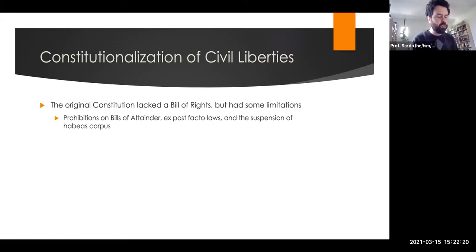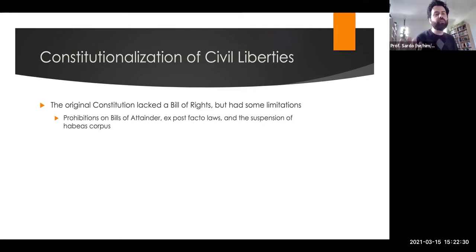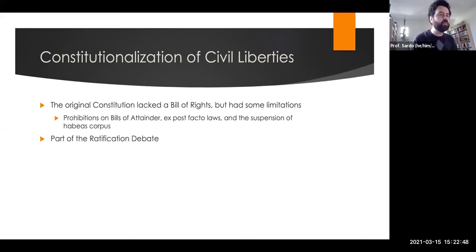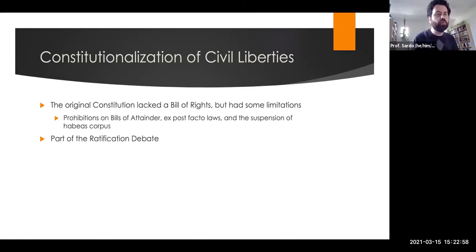Alexander Hamilton was actually skeptical of enumerating rights in a Bill of Rights, because once you explicitly write down what the government can't do, he was concerned that creates potentials for loopholes, exceptions, and exclusions — that people would try to game the system. But the Bill of Rights became part of the ratification debate between the Federalists and the Anti-Federalists. The Anti-Federalists were worried there wasn't explicit protection of civil liberties, and so part of what was promised was the Bill of Rights — amending the Constitution to prevent the federal government from becoming tyrannical.